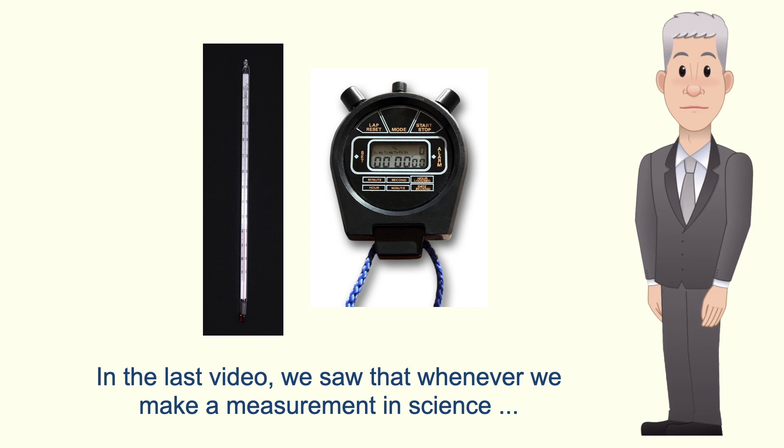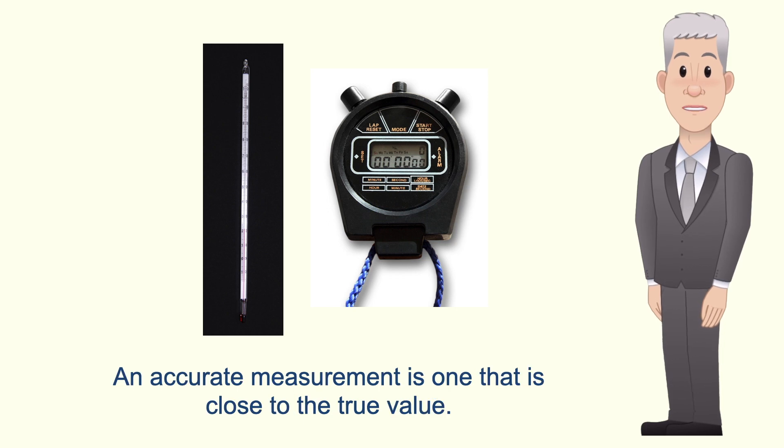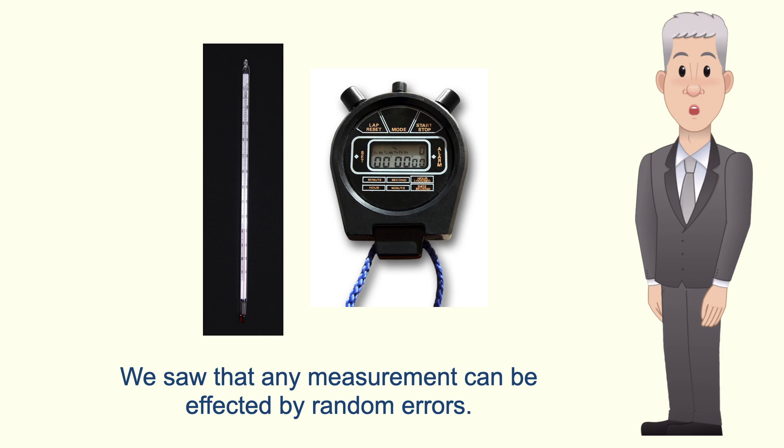In the last video we saw that whenever we make a measurement in science we want our measured value to be accurate. An accurate measurement is one that's close to the true value. We saw that any measurement can be affected by random errors.